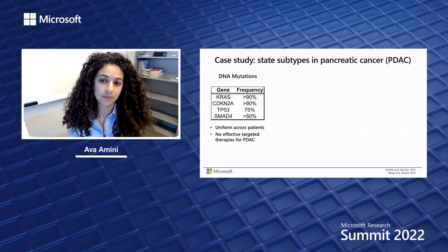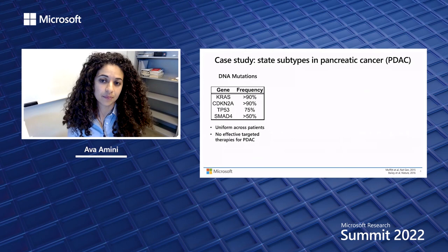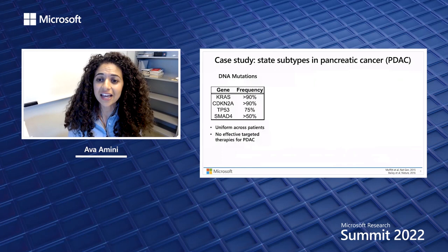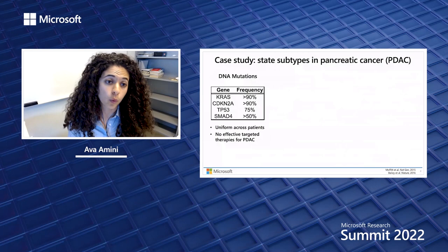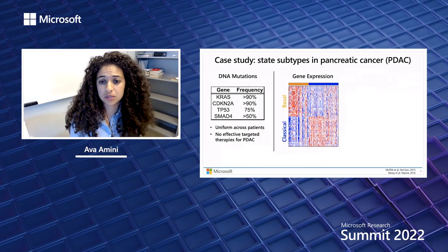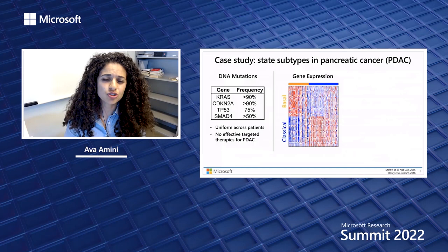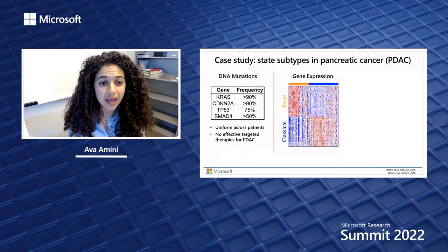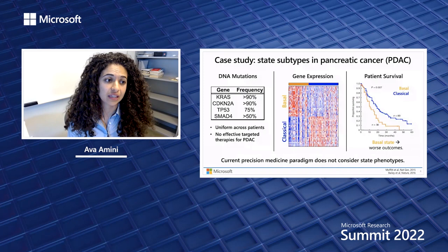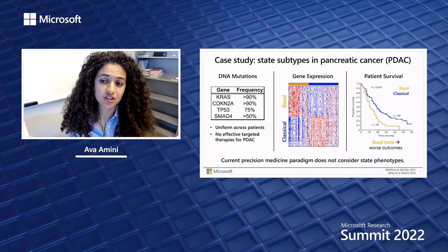Today I'll share a first work from our team, where we've directed this idea towards pancreatic cancer — a cancer with an extremely high mortality rate and for which so few treatment options exist. Most pancreatic cancer patients have a set of key DNA alterations, but there are no effective therapies that work against these genetic targets. Furthermore, despite how common these mutations are across the patient population, there exist drastically different gene expression signatures resulting in drastically different tumor cell states, and these different cell states actually correlate significantly with patient outcomes and survival.